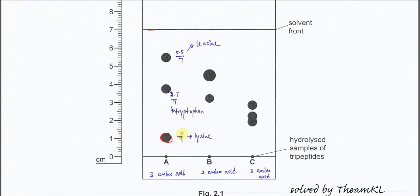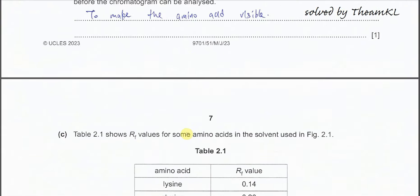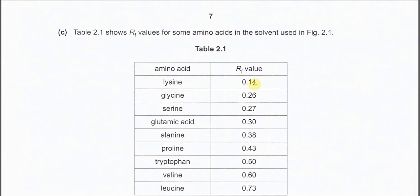And how we know because later it will give a table, right? So it's about 0.14. So 1 over 7 is near to this value. So we know that it's lysine.